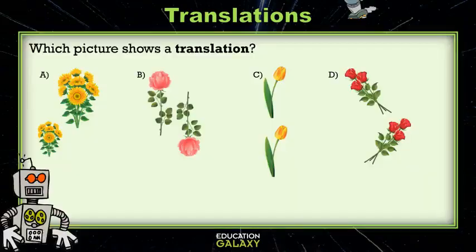Let's look at an example. Which picture shows a translation? So the first one for A, it does look like it slides, but remember what was so important? It can't change size, and it looks like the flowers got bigger.